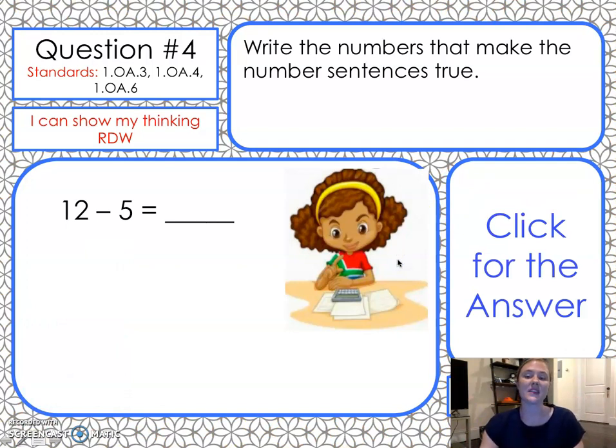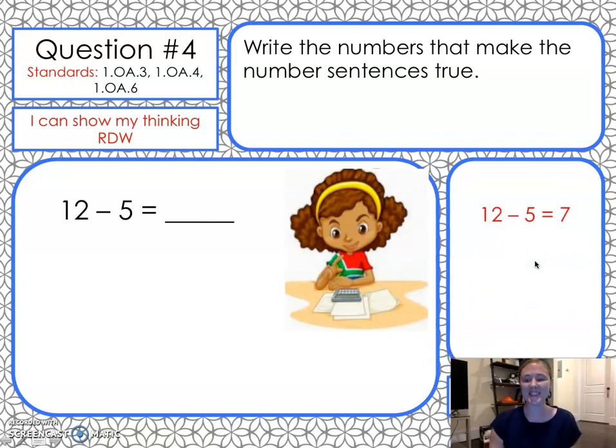Write the number sentences that make the number sentences true. Twelve takeaway five equals... You can choose to do your take from ten strategy, or counting on. If you need more time, pause now. Ready? Twelve takeaway five is seven.